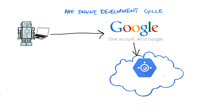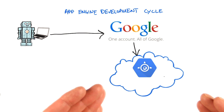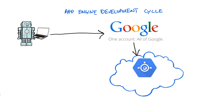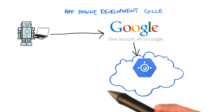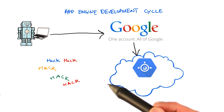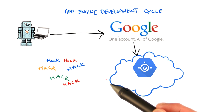What you do is simply log on to the developer's console that we will go through later and register the App Engine applications you want to create. And once you've done that, the time has come for you to create those great cloud applications. So you need to sit down and hack until you have something awesome that you want to test.